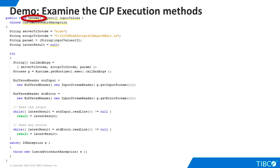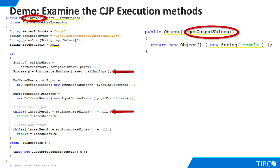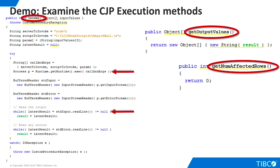Now let's examine the methods that are called at execution time. The Invoke method runs the procedure. For this basic demo, we simply execute the Magic 8-Ball JavaScript as a new process, passing the question as a command-line parameter. The Magic 8-Ball writes its answer to the standard output, and it is piped back to the Java code. TDV can then call GetOutputValues to retrieve the response from the Magic 8-Ball. The GetNumAffectedRows method returns the number of rows that were updated, inserted, or deleted. Since the Magic 8-Ball only returns data, we return zero here.